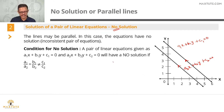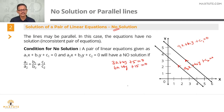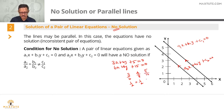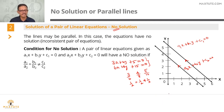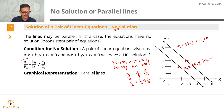For example, take 3x plus 4y plus 5 equals 0 and 6x plus 8y plus 15 equals 0. Here a1 by a2 is 3 by 6 equals 1 by 2, and b1 by b2 is 4 by 8 equals 1 by 2, so a1 by a2 equals b1 by b2. But c1 by c2 is 5 by 15 equals 1 by 3, which is not equal to 1 by 2. Therefore this pair has no solution and represents a pair of parallel lines.